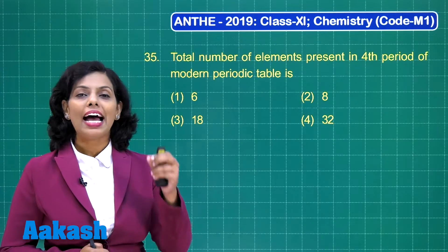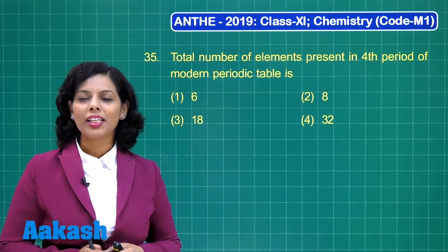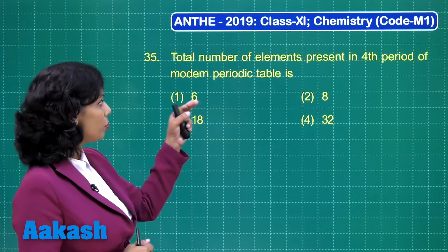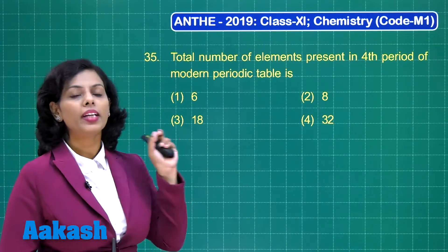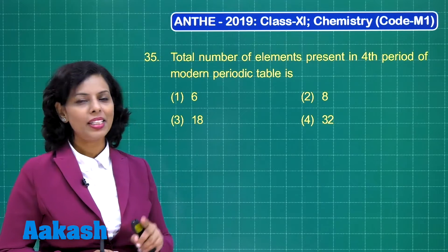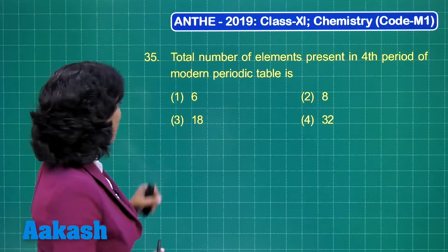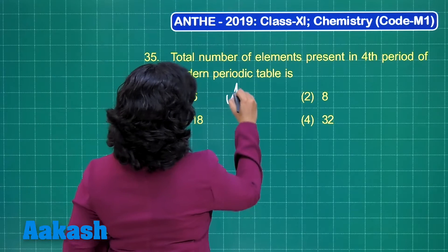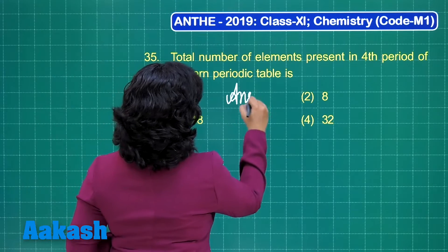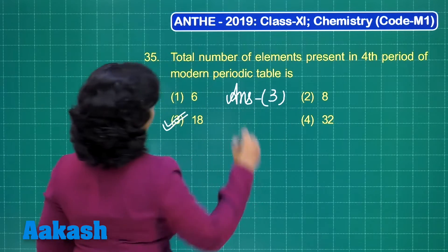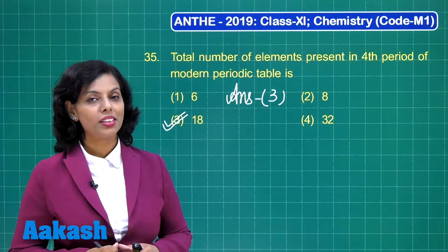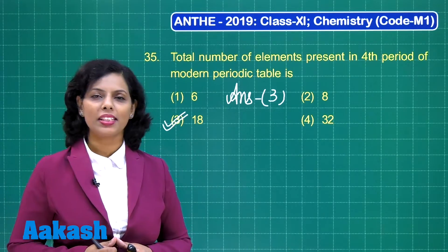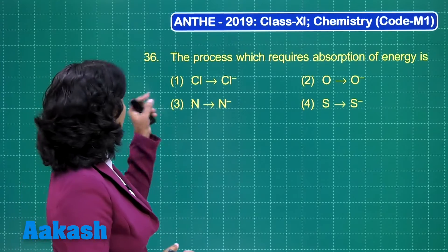The fifth period also has 18 elements and the sixth period has 32 elements. On that basis, the fourth period consists of 18 elements, so the correct answer is option 3. Now let's move on to question number 36.